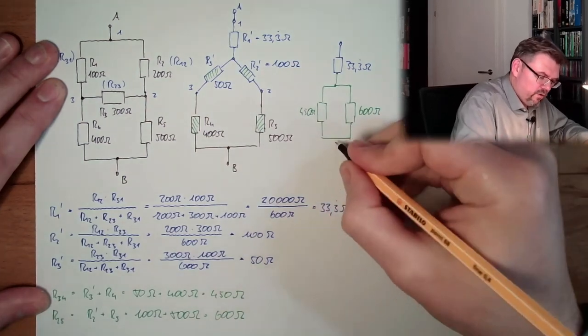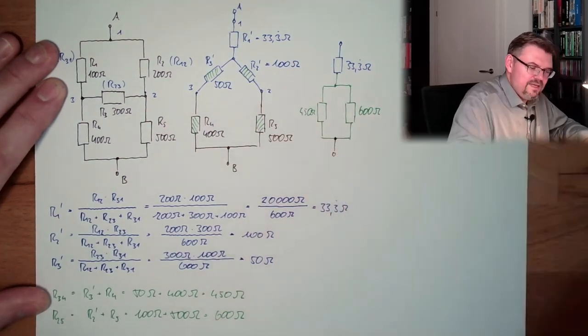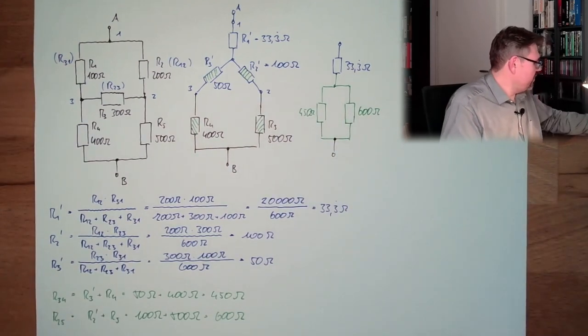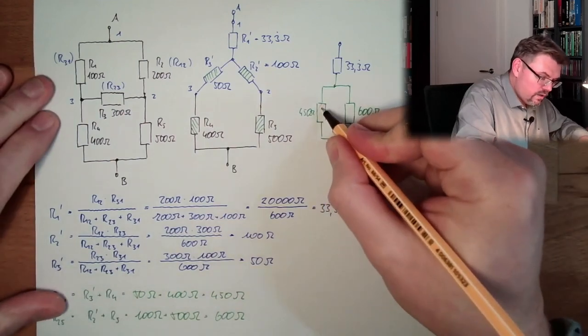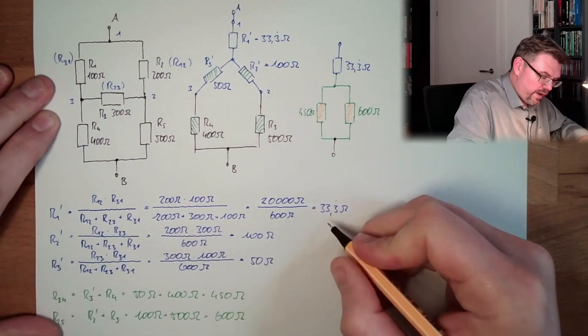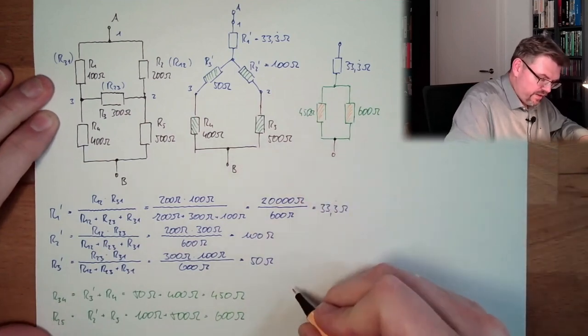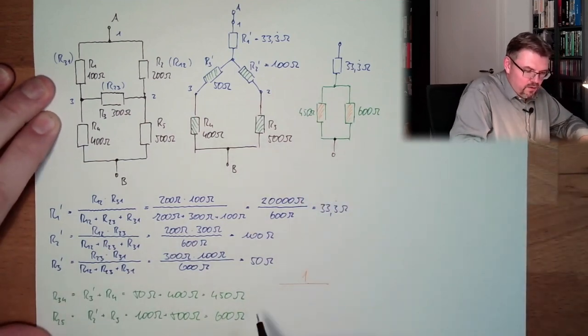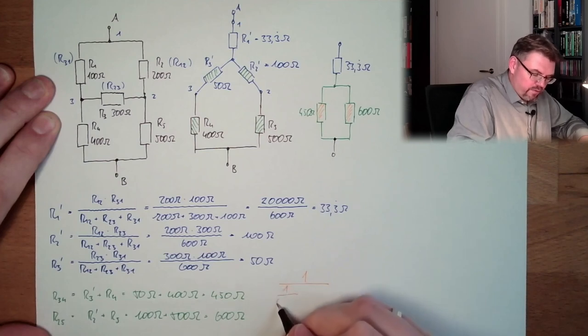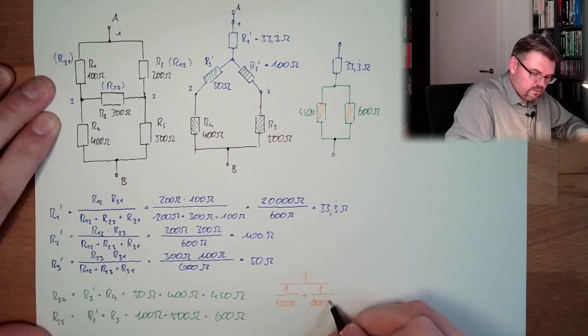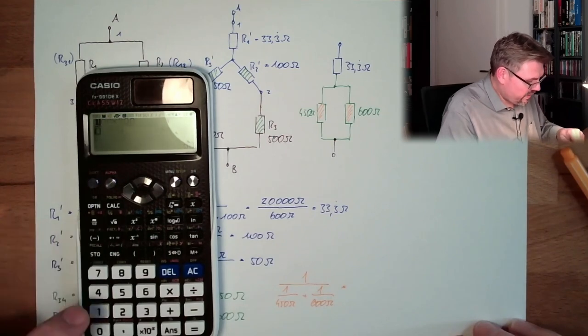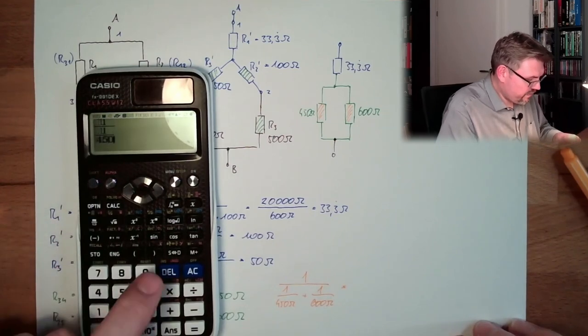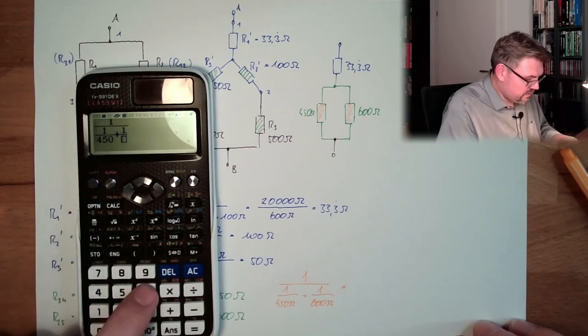So actually what we have here is 33.3 ohms, and here we have the combination 450 ohms, and here we have the combination 600 ohms. Now it's already looking much easier. And now let's have a look at these two, because those two are parallel. So we have here the value of 1 divided by 1 divided by 450 ohms plus 1 divided by 600 ohms, and this equals 257.14 ohms.